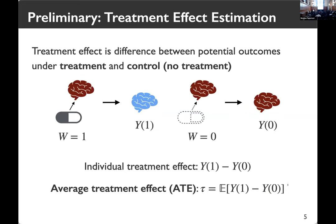Starting from some preliminaries: the individual treatment effect is essentially the difference between what happens if you take a drug and what happens if you don't. Since everyone is different, we take the average of individual treatment effects over the entire population to define the Average Treatment Effect, which we call ATE. This is the estimand of our work.